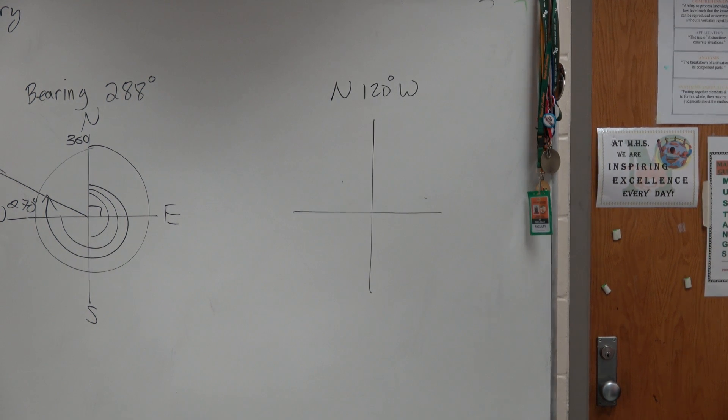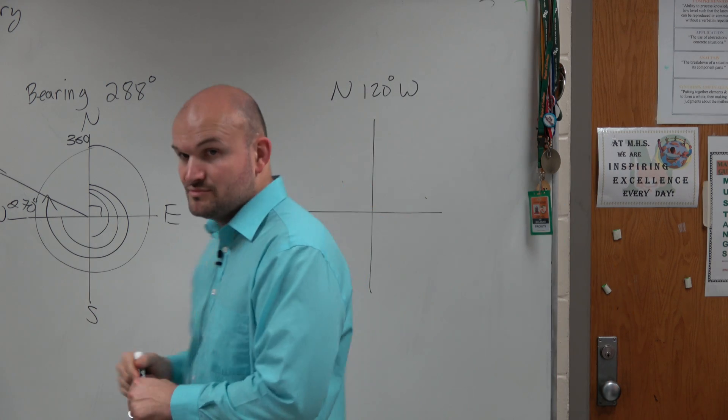Problems that we do in this class. And the last one, guys, you have north 120 degrees west. So again, we have a bearing.